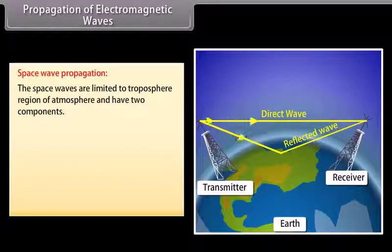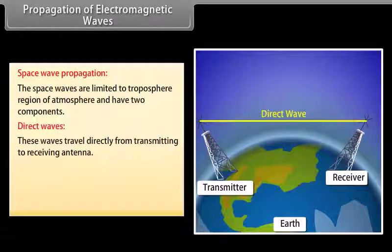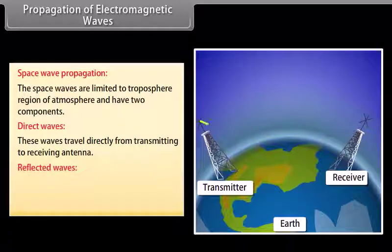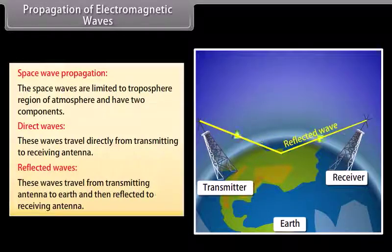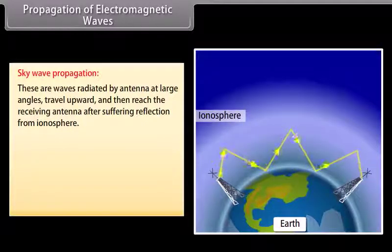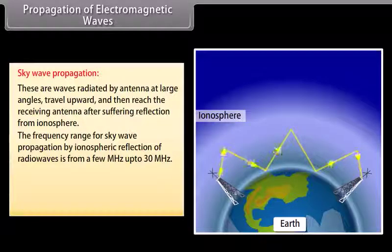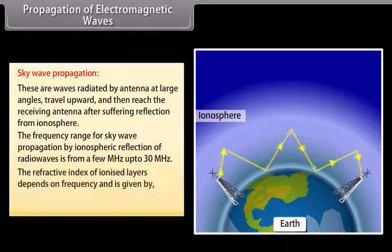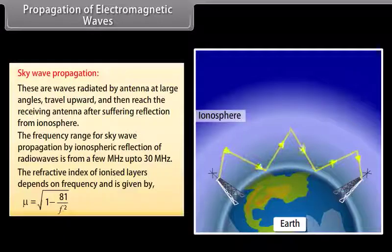Space waves are limited to the troposphere region of the atmosphere and have two components: direct waves, which travel directly from the transmitting to the receiving antenna, and reflected waves, which travel from the transmitting antenna to Earth and are then reflected to the receiving antenna. Sky waves are radiated by antennae at large angles, travel upward, and reach the receiving antenna after reflection from the ionosphere. The frequency range for sky wave propagation is from a few megahertz up to 30 megahertz. The refractive index of ionized layers is given by √(1 − 81/f²).